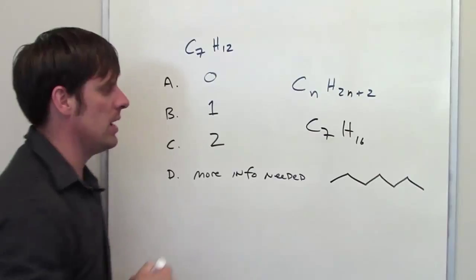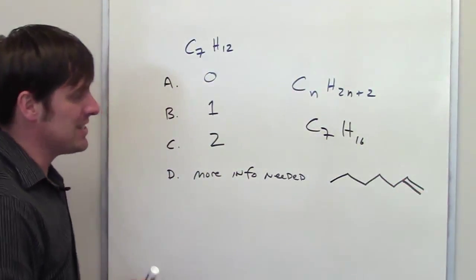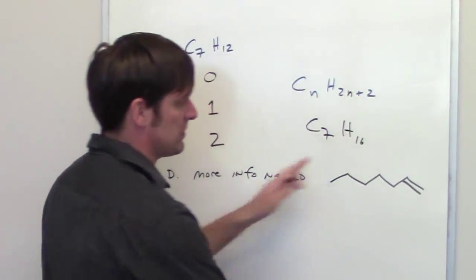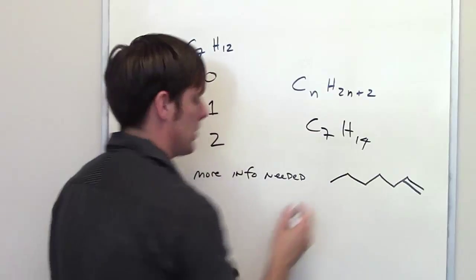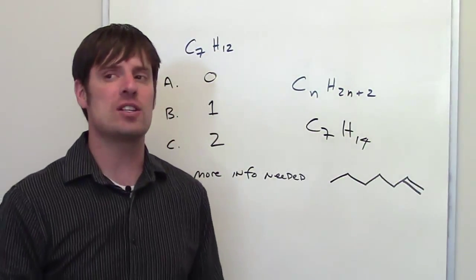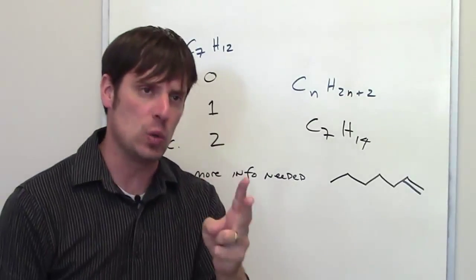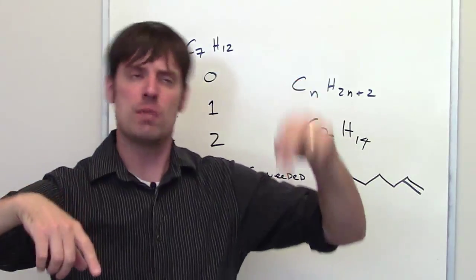Now, what happens if I add a double bond? I'll go ahead and add a double bond just right here for the fun of it. But what happens is the formula now changes from C7H16 to C7H14. In other words, adding one double bond decreases the number of hydrogens by 2.